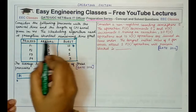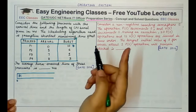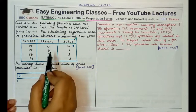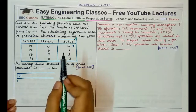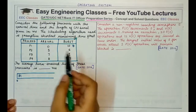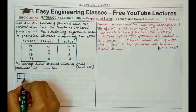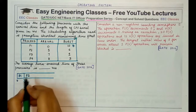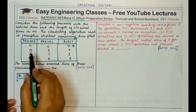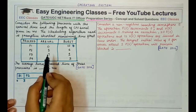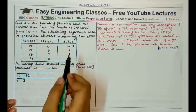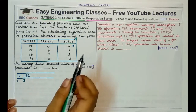Since the scheduling algorithm is shortest remaining time first, the remaining time of P1 is seven and the remaining time of P2 is six, so we choose P2 over P1 and preempt P1. We stop P1 at time three and start executing P2. We execute P2 until time period seven, at which point we check if any new process has a shorter remaining time.